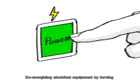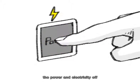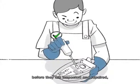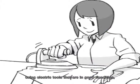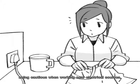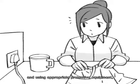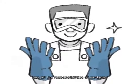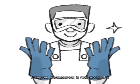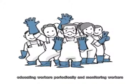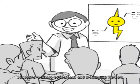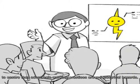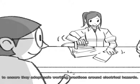De-energizing electrical equipment by turning the power and electricity off before they are inspected and repaired, using electric tools that are in good condition, being cautious when working near electrical sources and using appropriate protective equipment are all the responsibilities of workers. However, management is responsible for educating workers periodically and monitoring workers to ensure they adopt safe working practices around electrical hazards.